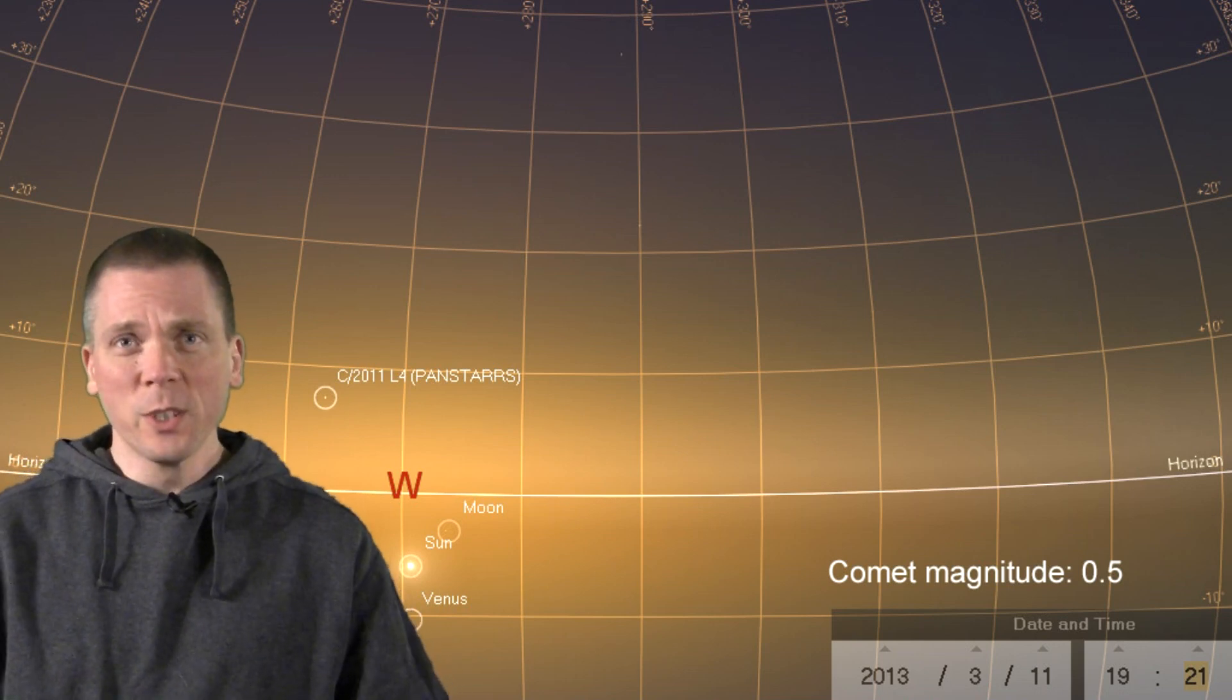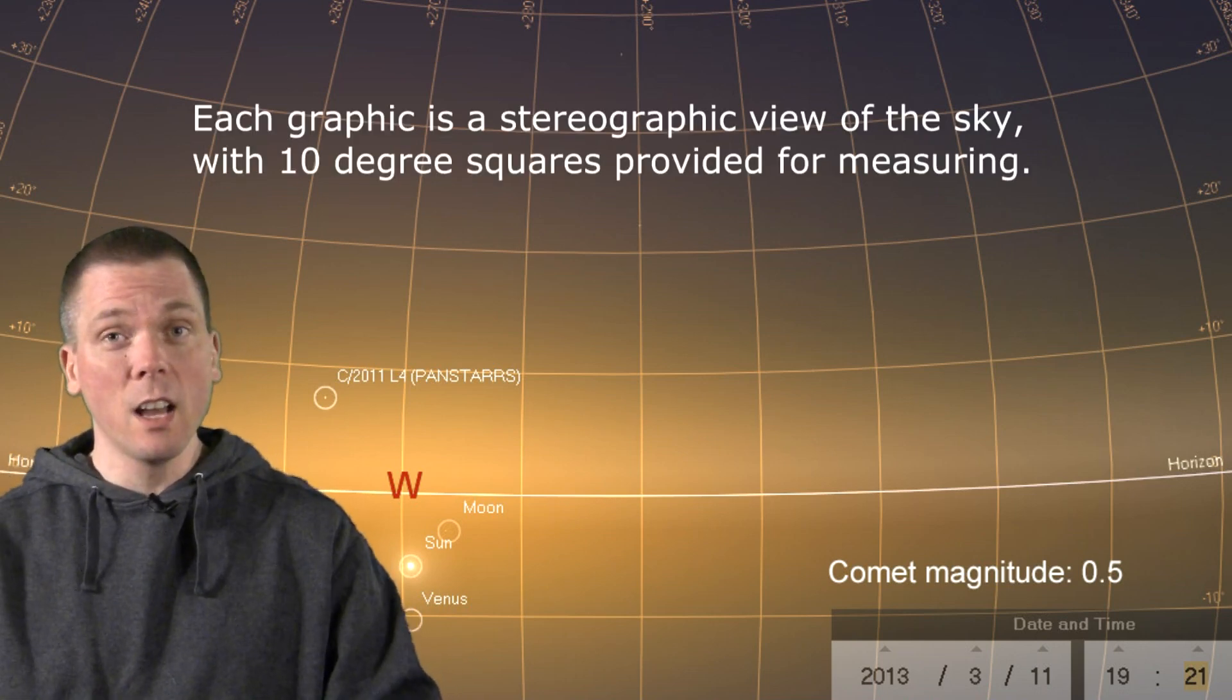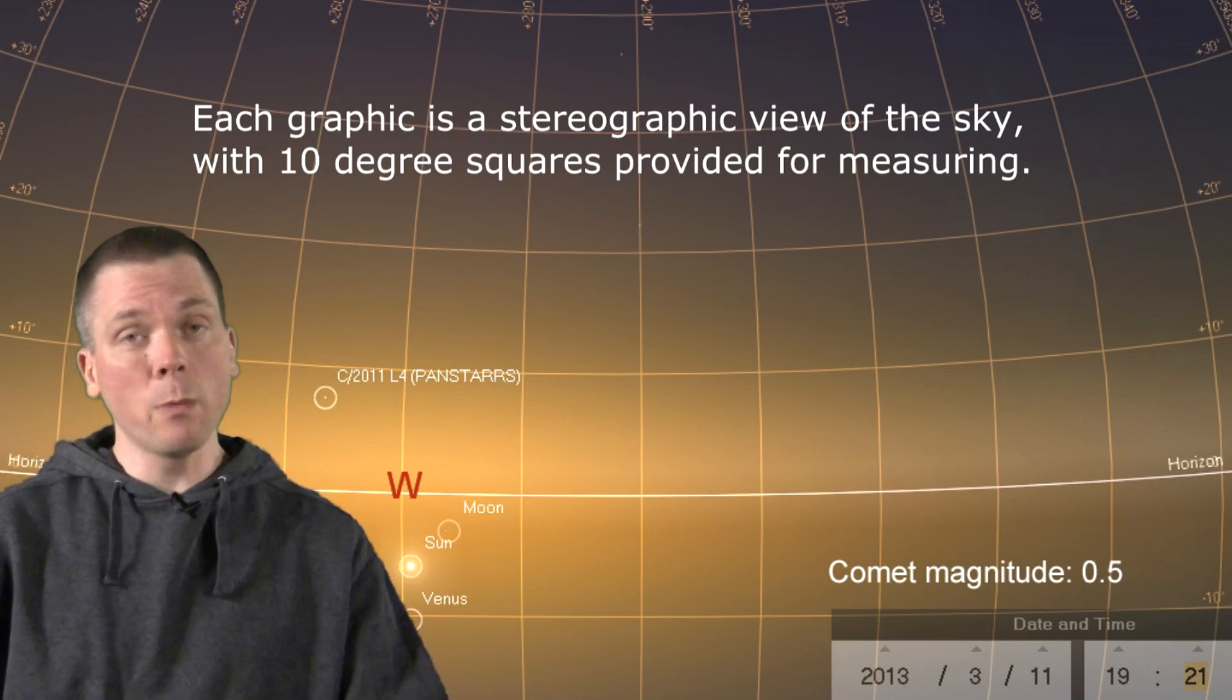Check my Stargazing Basics 2 video to learn how to easily measure distance in the sky. These graphics show no ground, so you see the placement of the sun relative to the horizon and where the comet is.